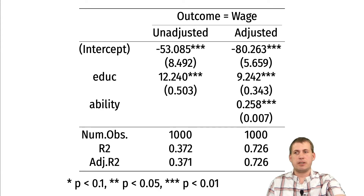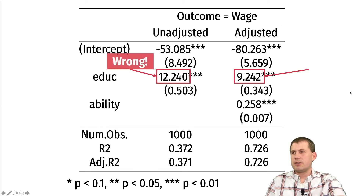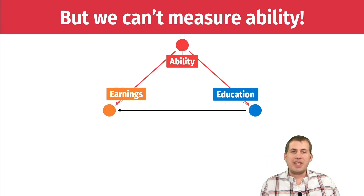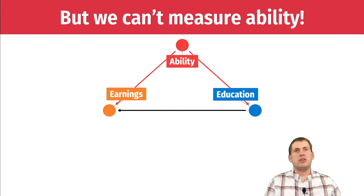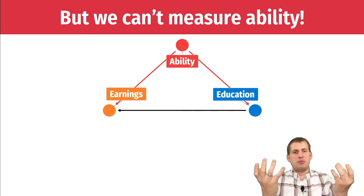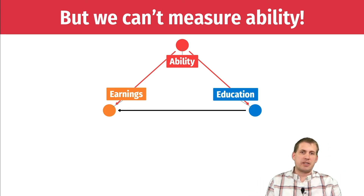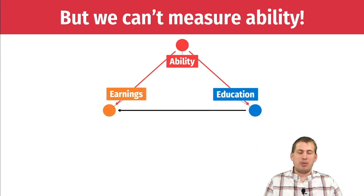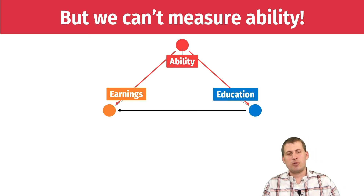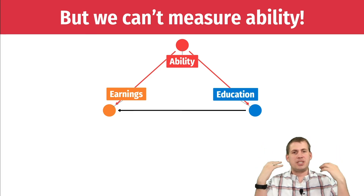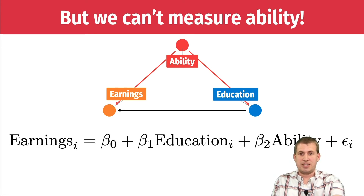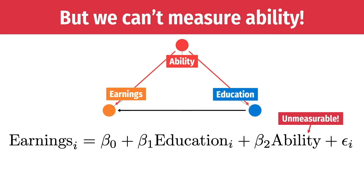So the coefficient of 12.24 is wrong, while 9.24 is right, because we've adjusted for the backdoor. The issue, though, is that we can't measure ability. There's no magical ability score in a spreadsheet you can include as a column in your regression. It's wrapped up in a whole host of other factors — income, parental income, where you live, geography, race, discrimination — a whole host of things that influence ability that we can't measure. So we can't actually run this model; it's essentially an illegal model because ability is unmeasurable.